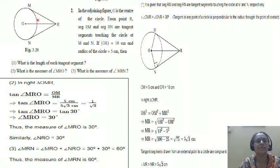Study the next question. In the figure, O is the center of the circle. From point R, you have RM and RN which are tangent segments touching the circle at point M and N. OR is 10 and the radius of the circle is 5. Then, what is the length of each tangent segment?